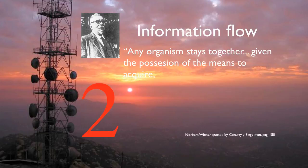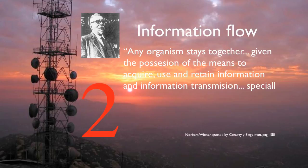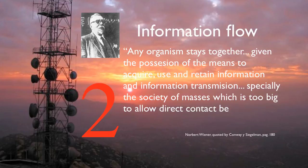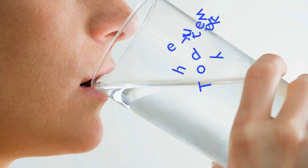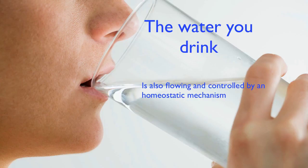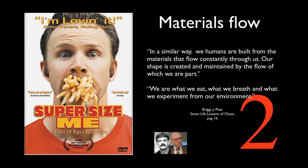As far as the flow of information goes, Norbert Wiener had these words to say: any organism stays together given the possession of the means to acquire, use, and retain information and information transmission, especially the society of masses which is too big to allow direct contact between its members. When we breathe, air flows — oxygen comes in and carbon dioxide goes out. Water flowing through our body is regulated by a homeostatic balance; incoming water displaces a similar amount about half an hour later. The flow eliminates waste. In a similar way, we humans are built from the materials that flow constantly through us. Our shape is created and maintained by the flow of which we are part. We are what we eat, what we breathe, and what we experience from our environment.